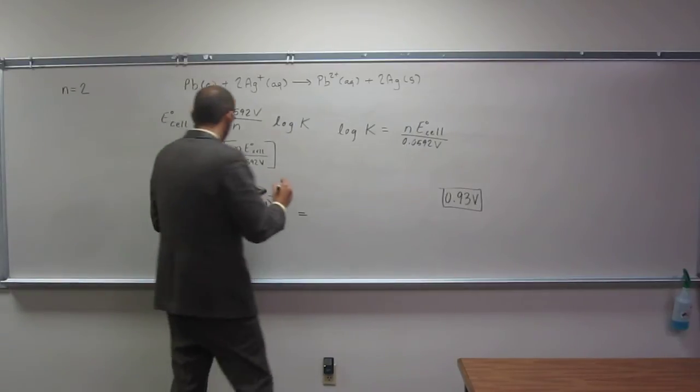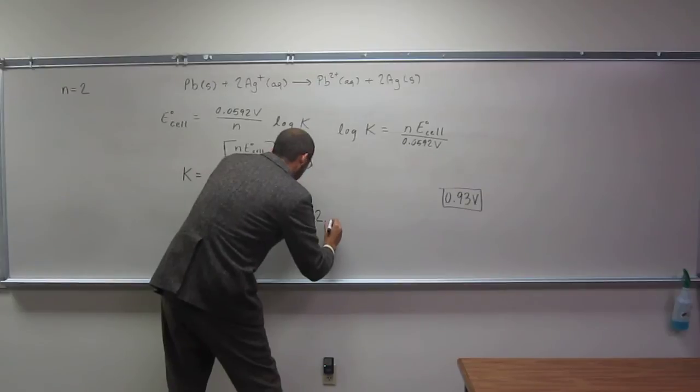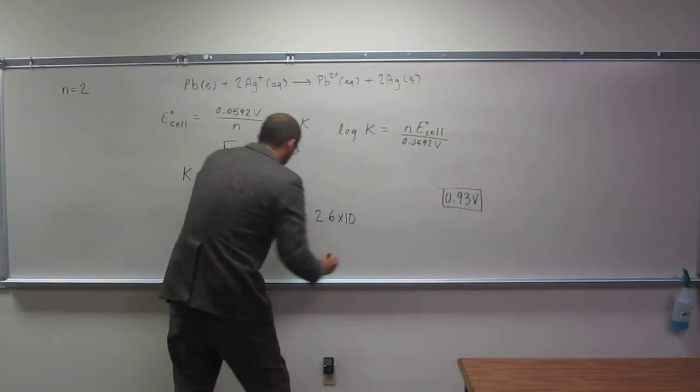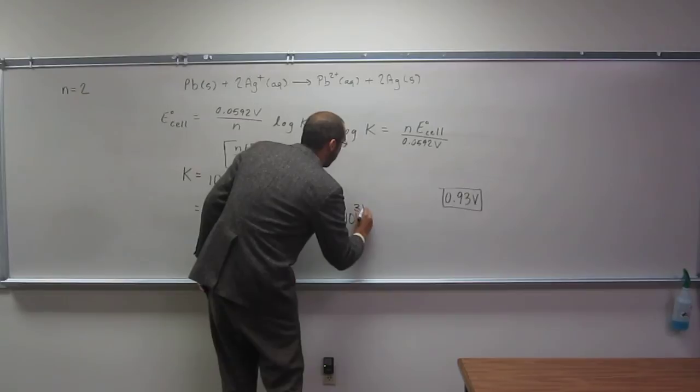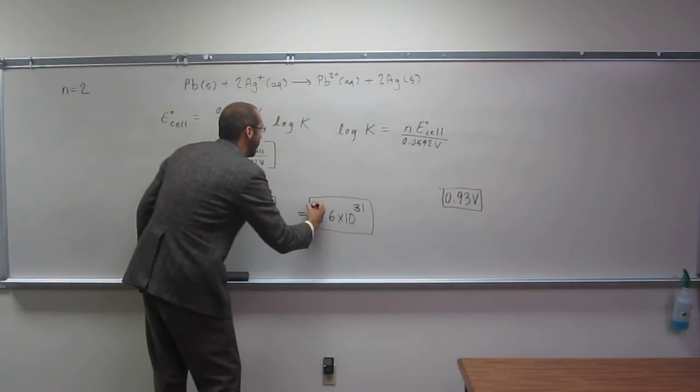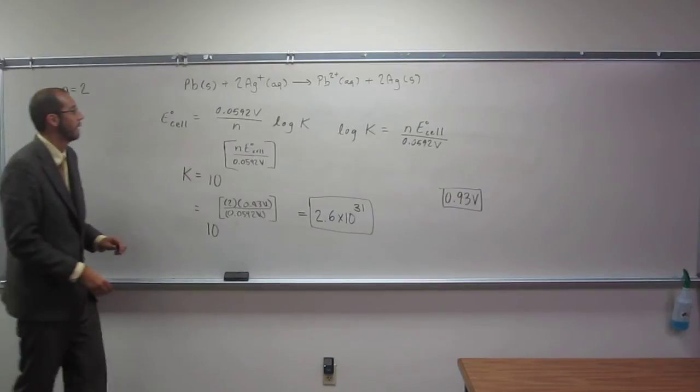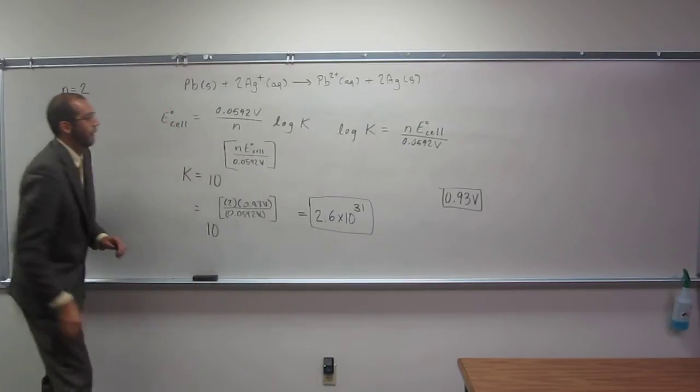So for K, 2.6 times 10 to the 31. So that's K. So this reaction, does it go or not? Yes. Yeah, super good.